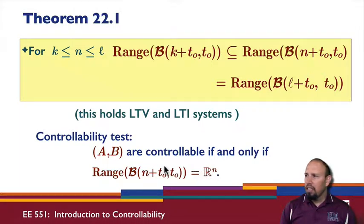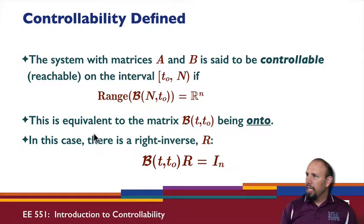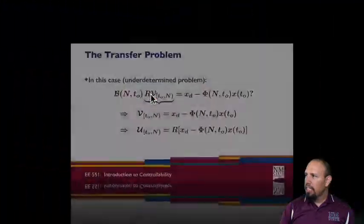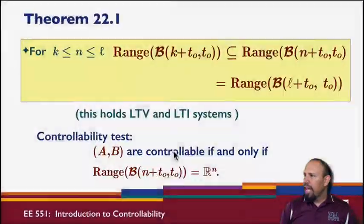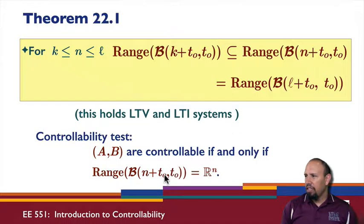So, we defined the controllability as the range of this being all of R^n for some N. What we're saying is, we can restrict our N, capital N, to little n plus t0. So, as long as we're going n steps ahead, little n steps ahead, then we can define that. So, I only need to look for n steps. I don't need to look arbitrarily large for arbitrarily large values of L, for example. So, I only need to go up to n.